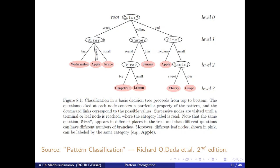Instead of asking a question related to size, I am asking a question related to shape based on my answer. I want to change my next question or next feature based on the previous answer. So we don't need to maintain size as the second feature for all branches.